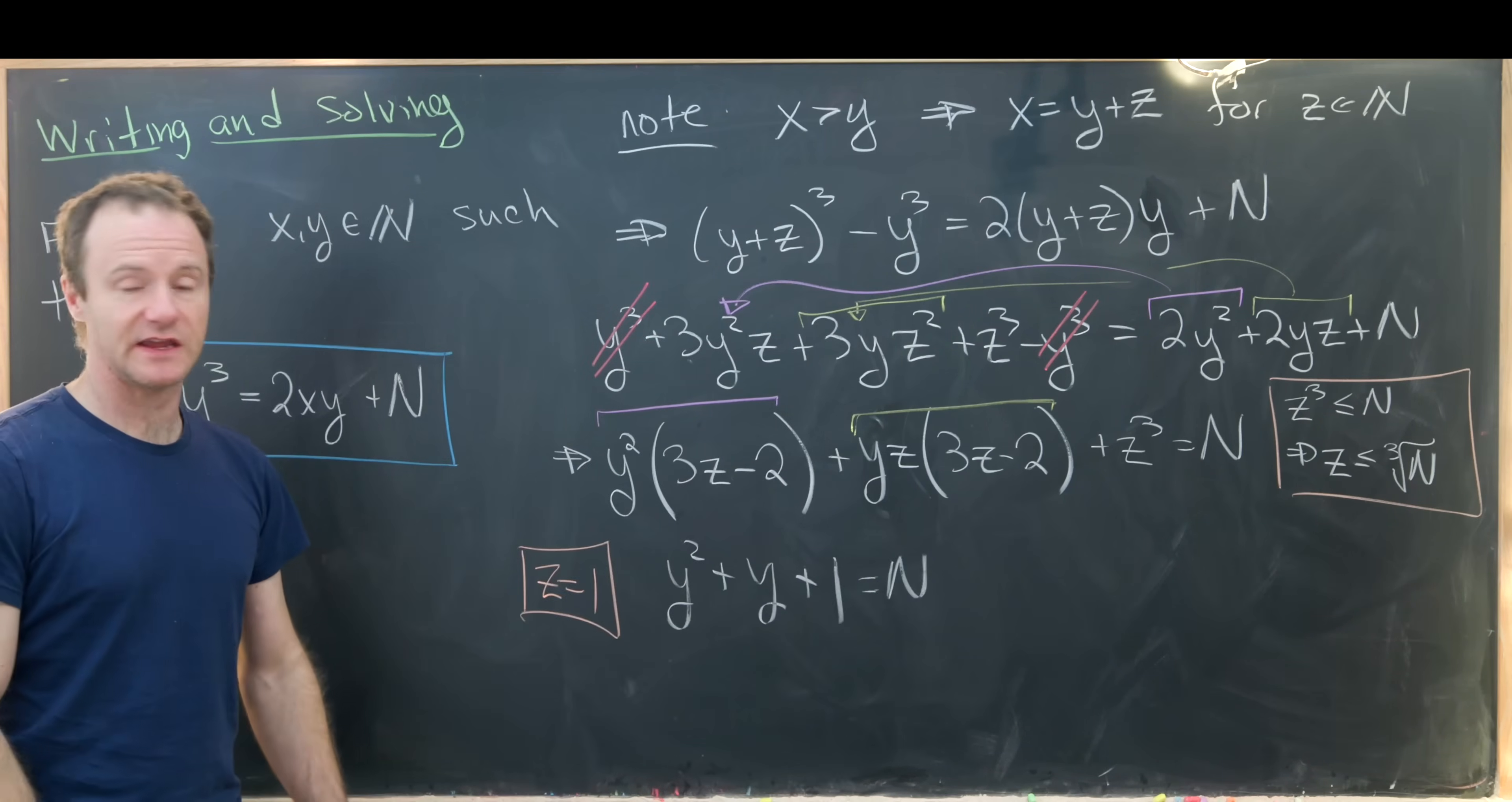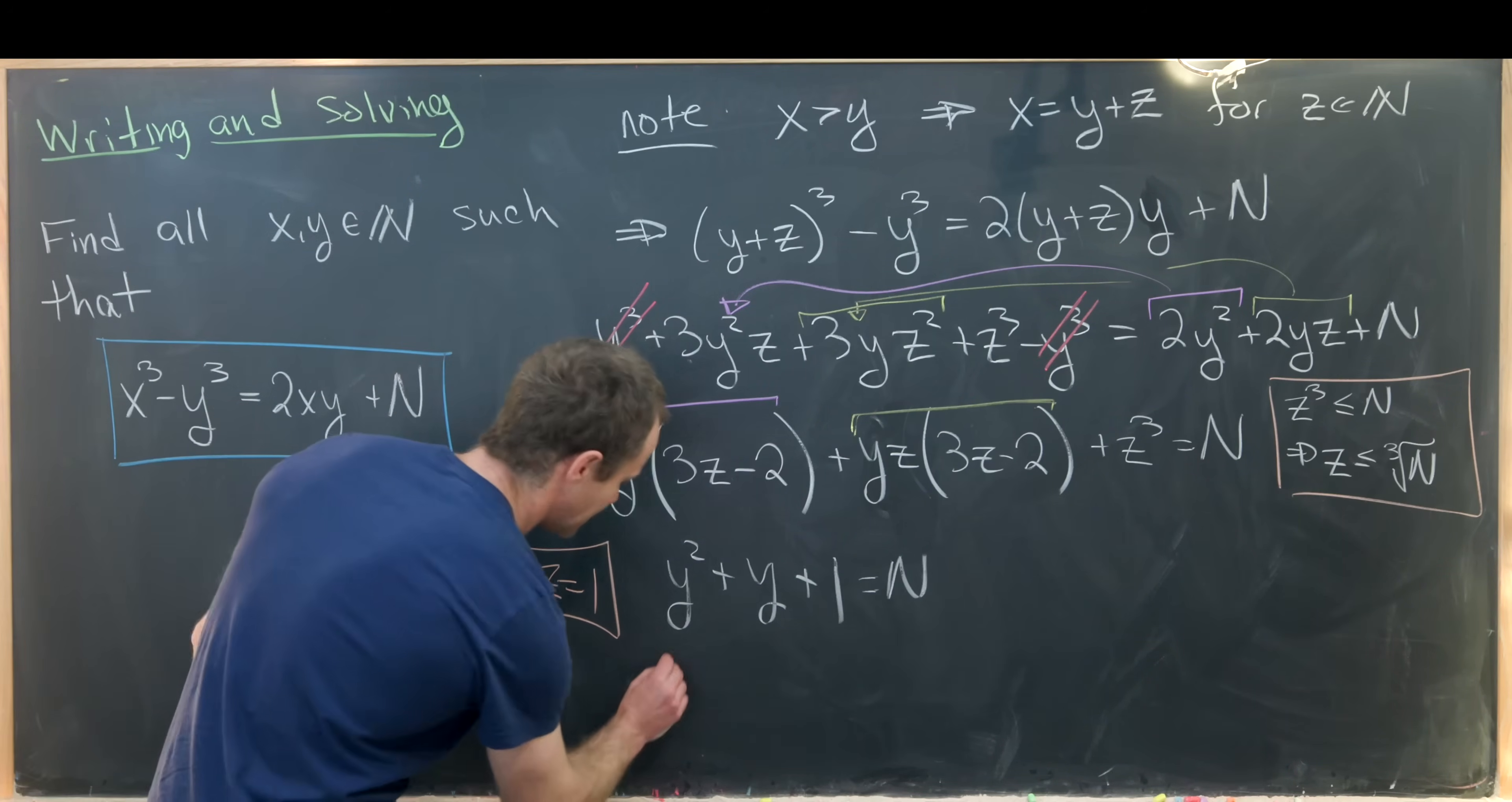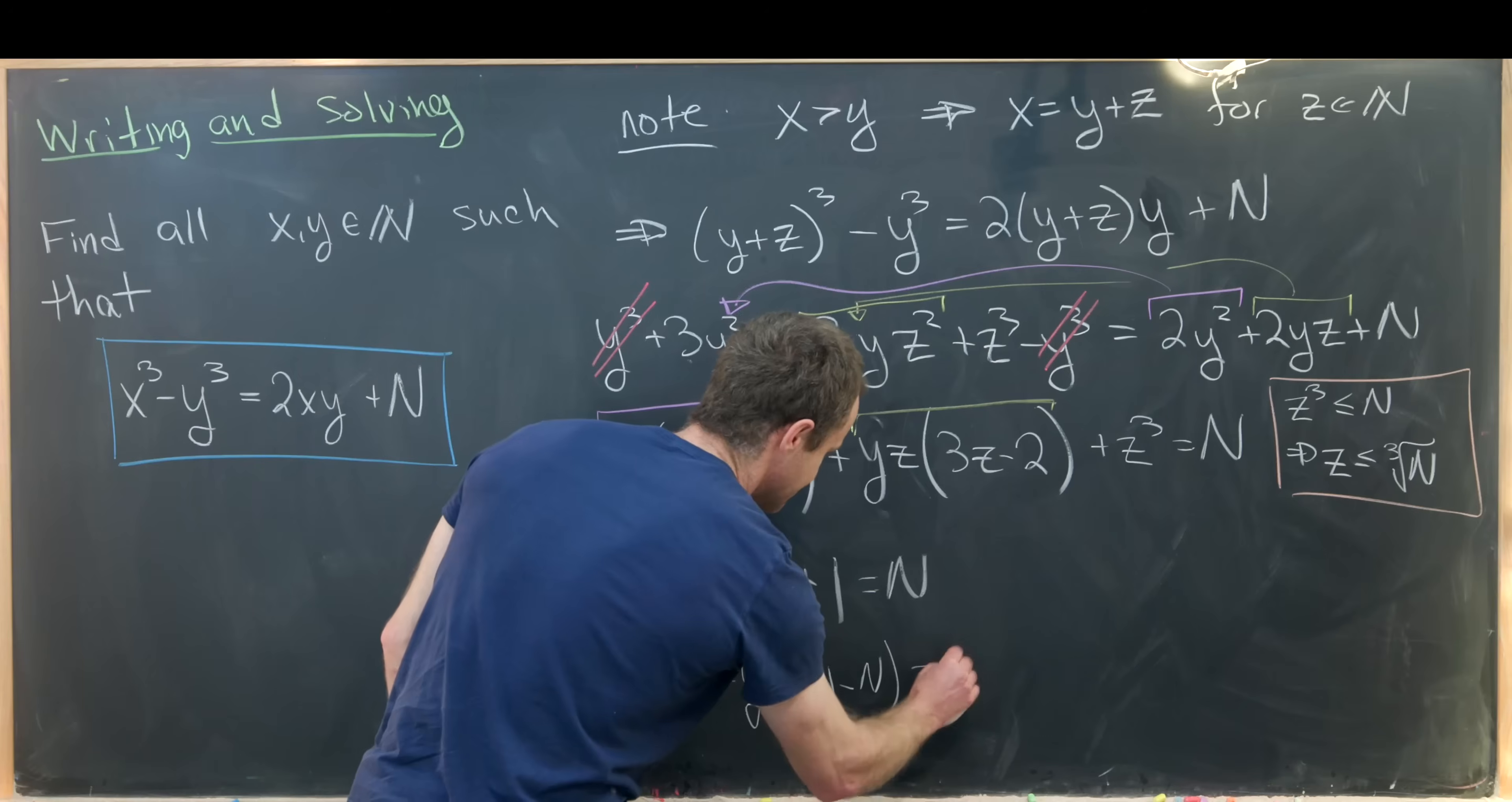So now we've got a quadratic equation in y which should be fairly easy to decide when it has a nice solution. We can simplify that to y² + y + 1 - N = 0.